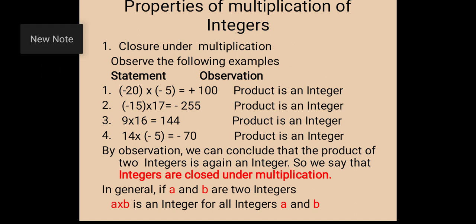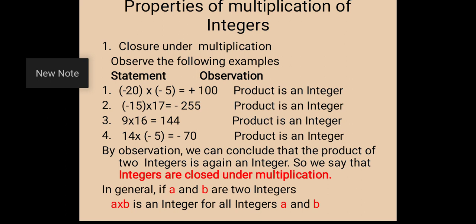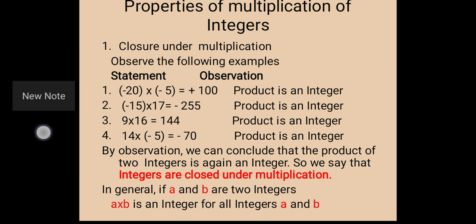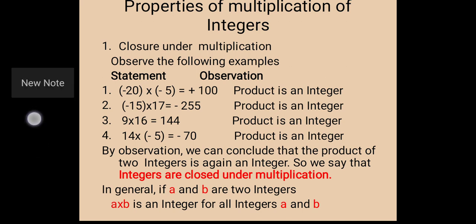Properties of multiplication of integers. First one: closure under multiplication. Observe the following examples — first see the statements, then the observation. First: minus 20 into minus 5 is equal to plus 100. The product is an integer. Minus 20 is an integer and minus 5 is an integer, and the product is also an integer. Second: minus 15 into 17 is equal to 255. Product is an integer.